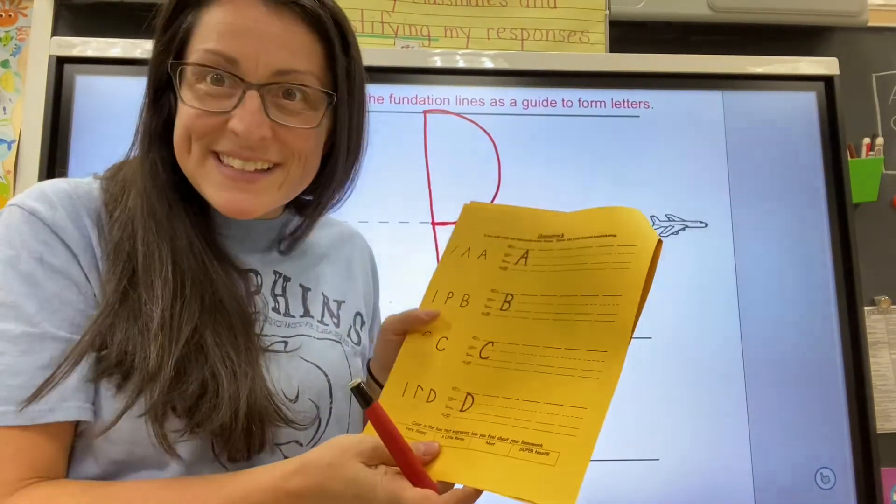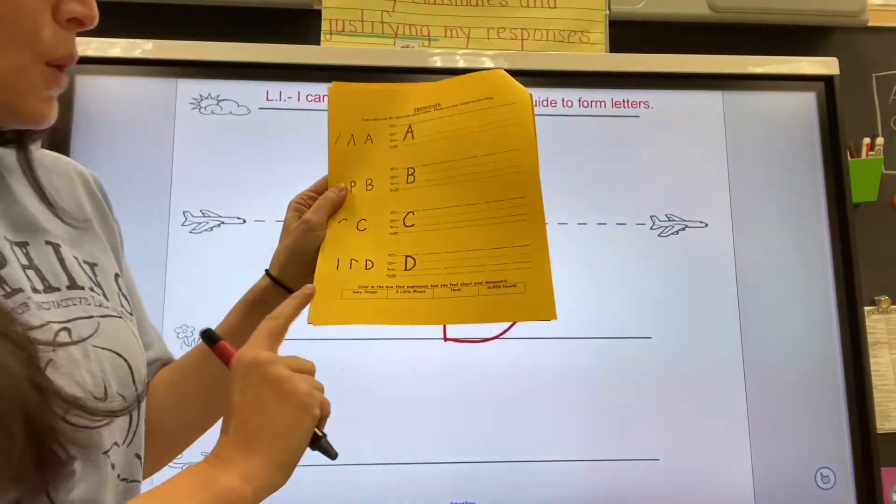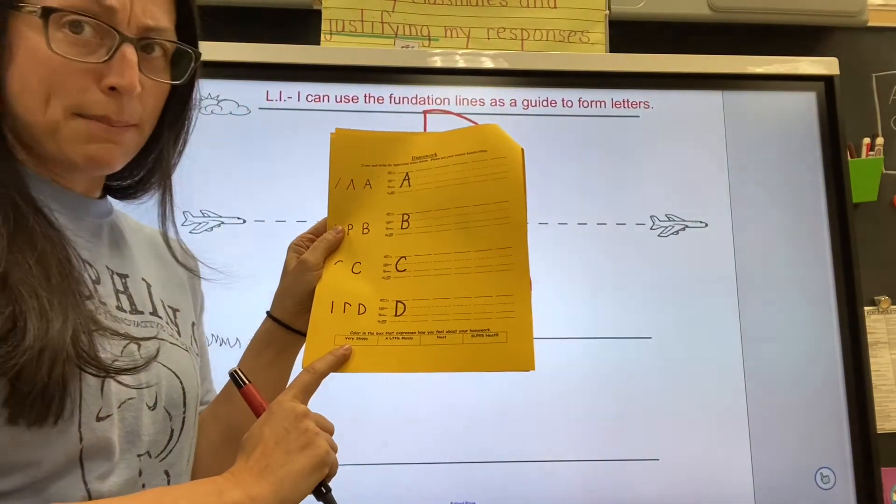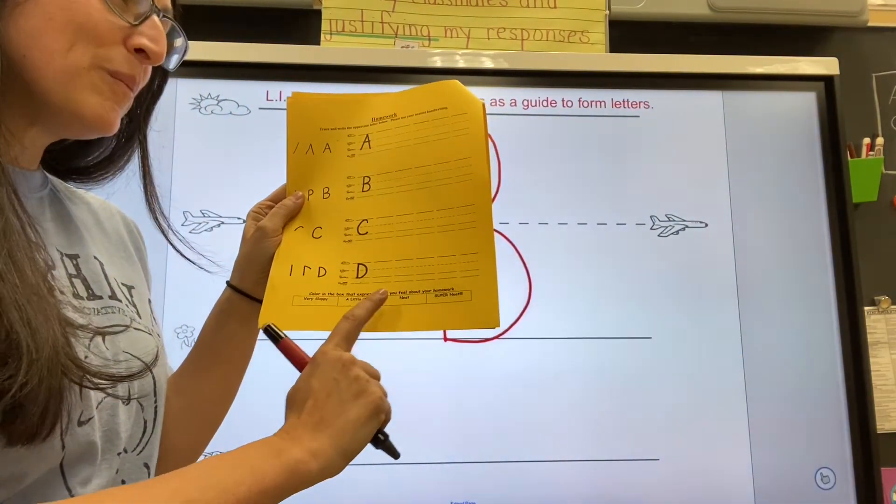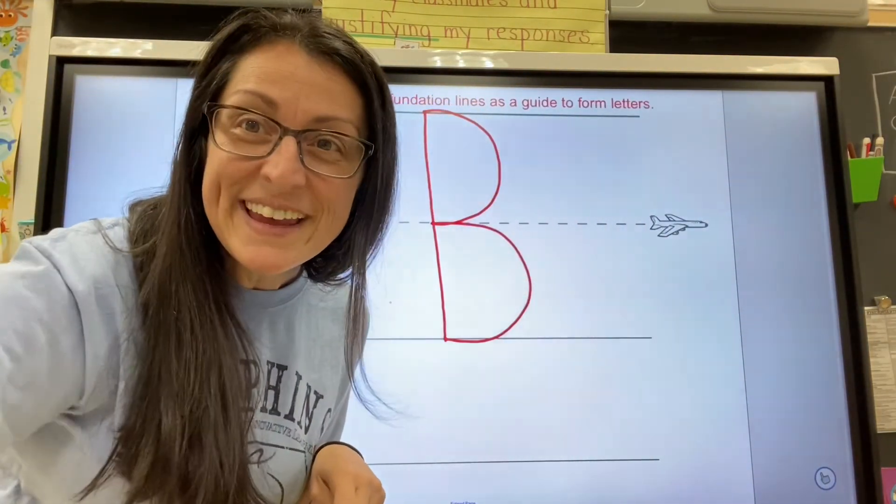Try to use your neatest handwriting and at the bottom when you're done with the whole sheet you're going to fill out the rubric. Do you think you were very sloppy? A little messy? Neat or super neat? Everyone try and be super neat!